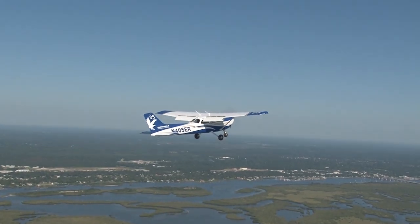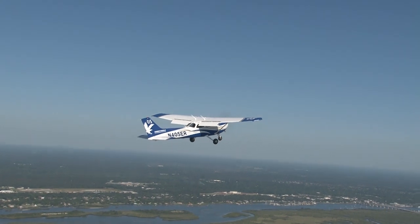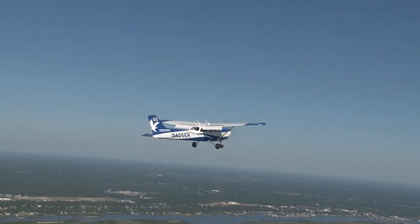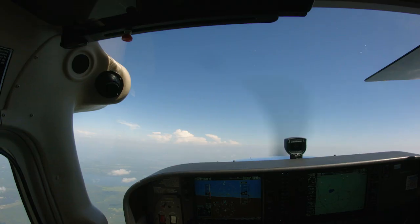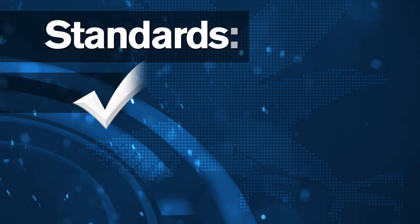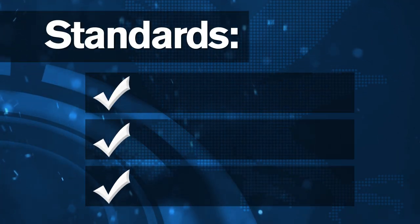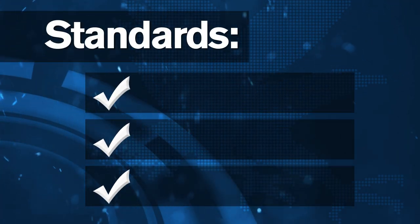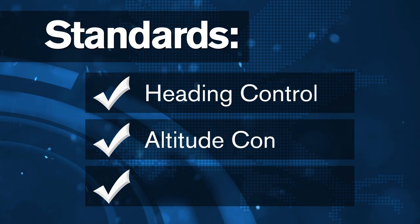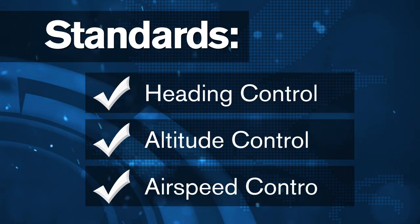In preparation for our first attempt at power-off stalls, we're going to take a few minutes to discuss the key elements of the maneuver. As with all other maneuvers, power-off stalls have three main areas that the pilot needs to concentrate on: heading control, altitude control, and airspeed control.